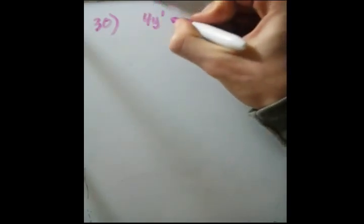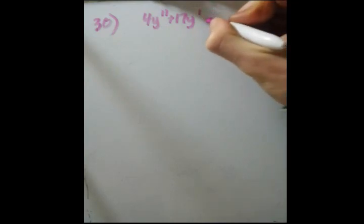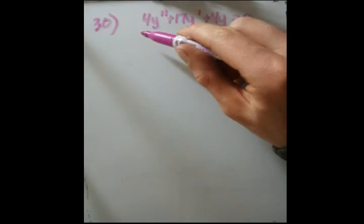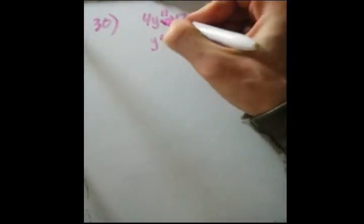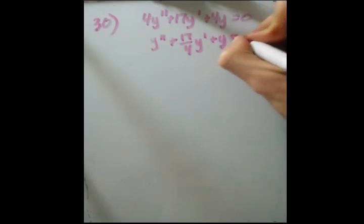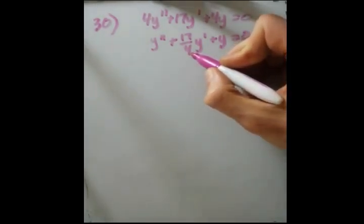So we have 4y double prime plus 17y prime plus 4y equals zero. So remember in our quadratic form, to solve b squared minus 4ac, we don't technically have to have this be one. But it's always nicer. So we can choose to do this one of two ways. We can divide by 4 to get rid of this. Or we could plug it into the quadratic formula as it is. I'm just going to show the nice clean solution by dividing, or cleaner, by dividing that over.